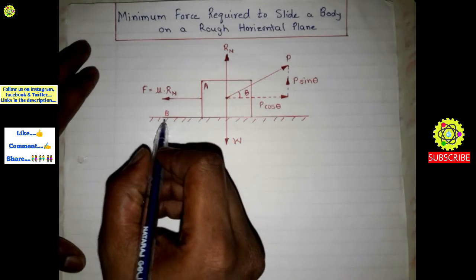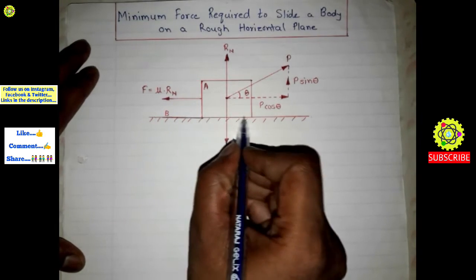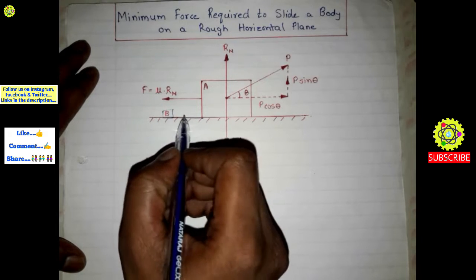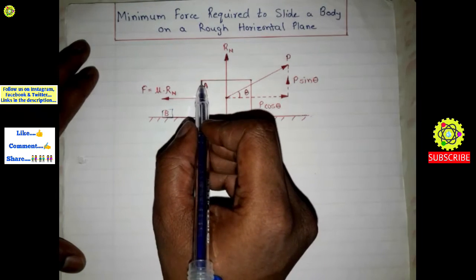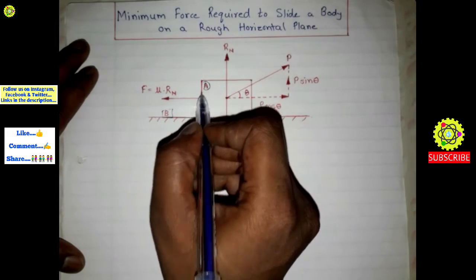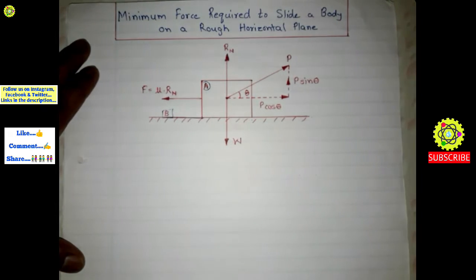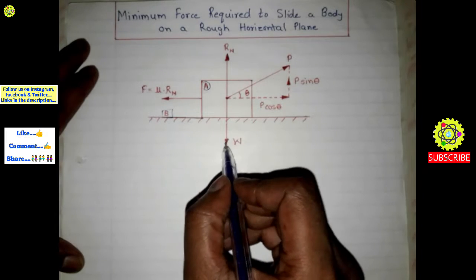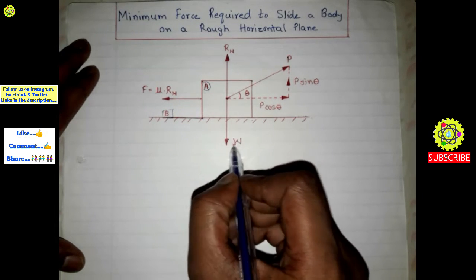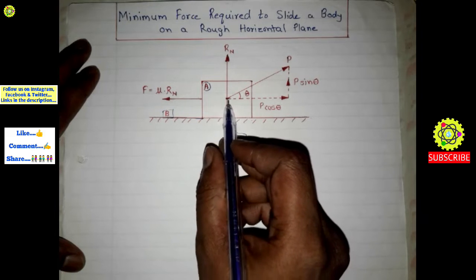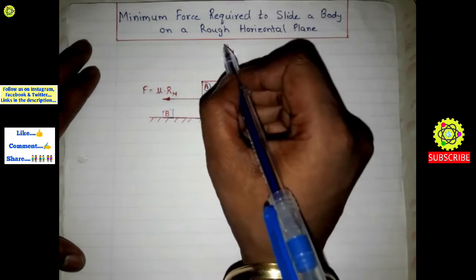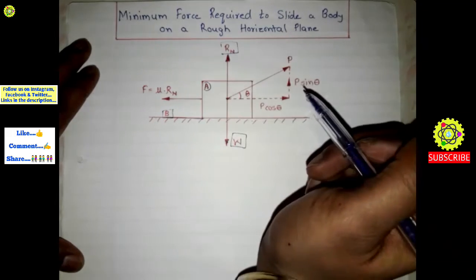Suppose this is a rough horizontal surface denoted by letter B. And on this surface, this body is resting which is denoted by letter A. This body has weight W which is acting vertically downwards. And opposite to that, there is a normal reaction.